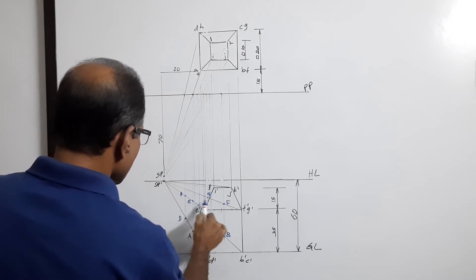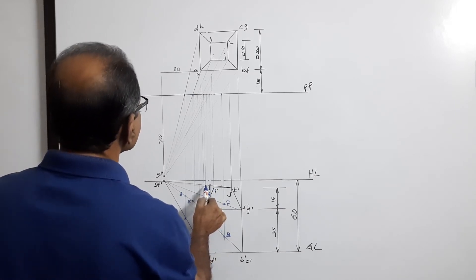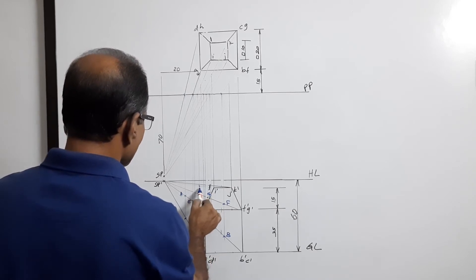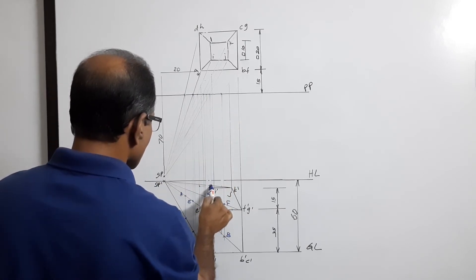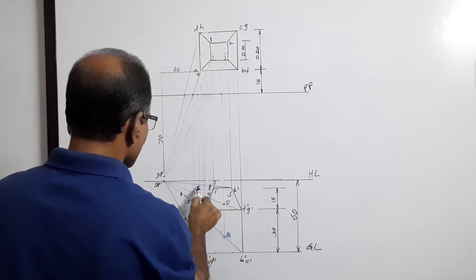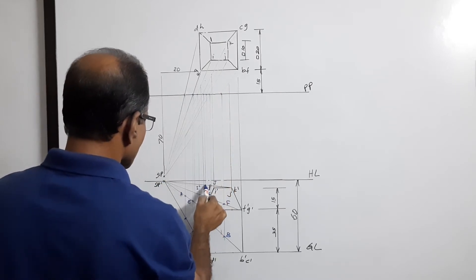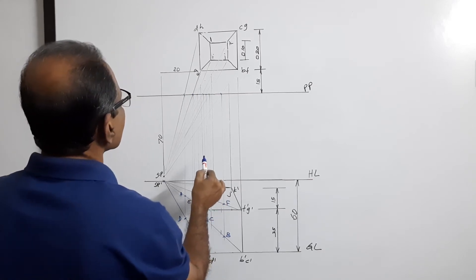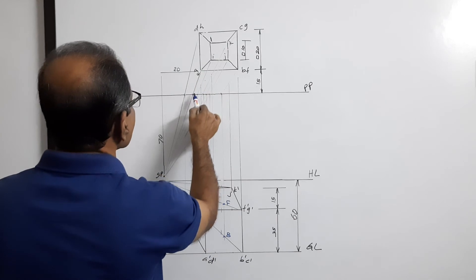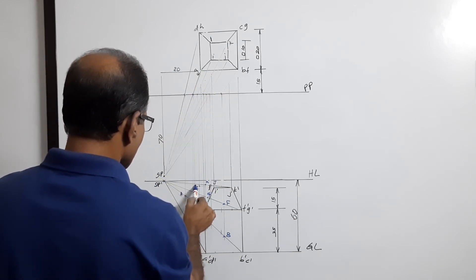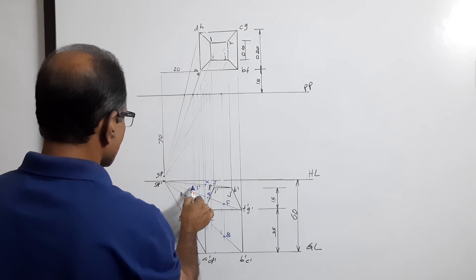Continue marking all perspective points: H, then I, J, K, L — these correspond to the top square of the frustum. We have now marked all the perspective points A, B, C, D, E, F, G, H for the prism level and I, J, K, L for the top of the frustum.